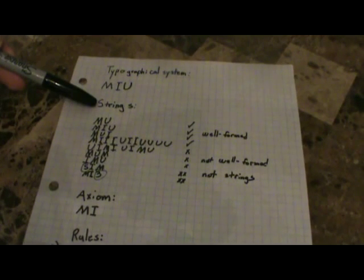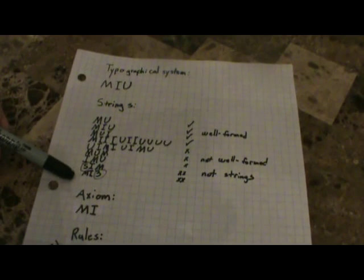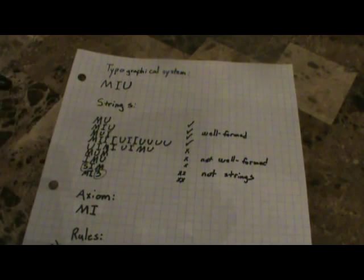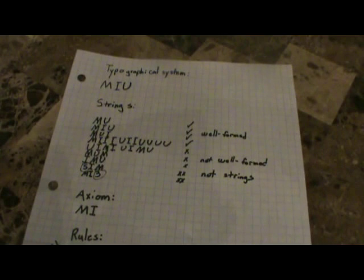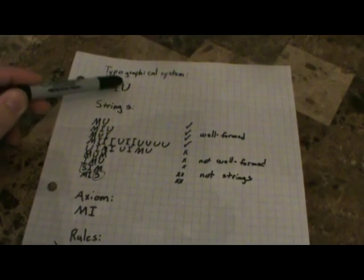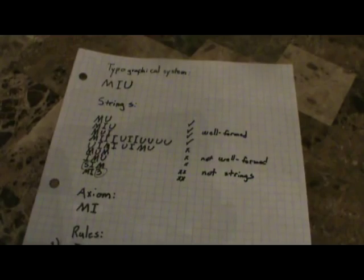The name of that system is the MIU system. Systems are made out of what are called strings. Here we've got a few strings of characters. Some of them are strings of the MIU system, some of them are not. The only definition limiting what is a string of the MIU system is that it contains nothing but the characters M, I, and U. 'SIM' is not; 'MI3' is not, because they contain other characters.